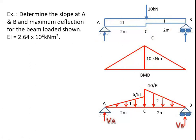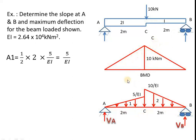So it goes from 5 to 10 and then to 0. This is the loading diagram — the M by EI diagram of the given beam becomes the loading for the conjugate beam. The end conditions remain the same and the span also remains the same. Only the loading diagram for the conjugate beam will be the M by EI diagram for the given beam.